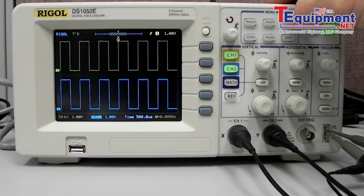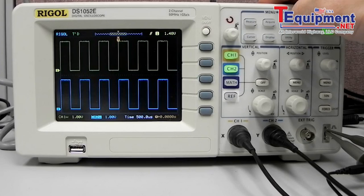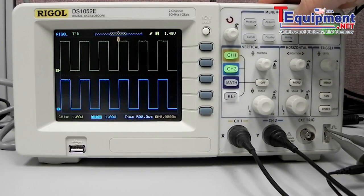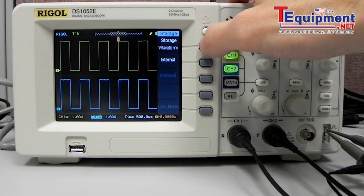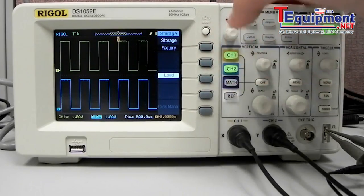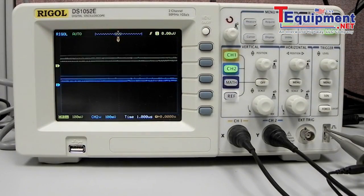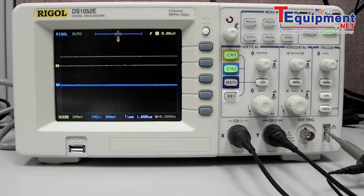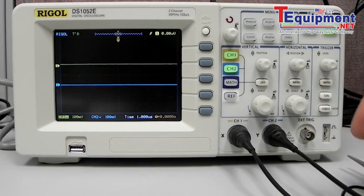If we want to get back to factory default settings that's very straightforward. We just want to press storage, select waveform, and rotate down to factory and then we can load the factory settings. If I disconnect the probes you can see now we're back to DC.